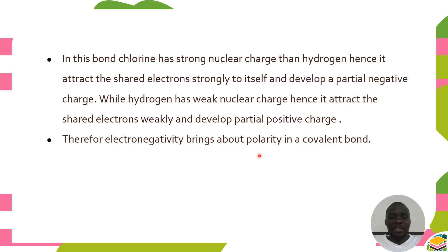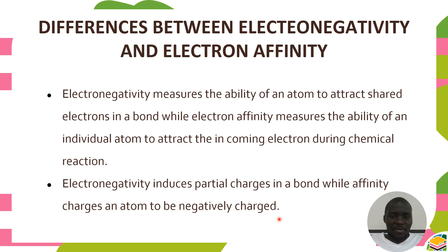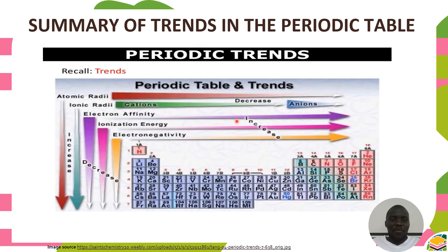Electronegativity measures the ability of an atom in a bond to attract the shared electrons to itself, while electron affinity measures the ability of an individual atom to attract an incoming electron during a chemical reaction. Electronegativity induces partial charges in a bond, while electron affinity causes an atom to become negatively charged because it involves the gaining of an electron.